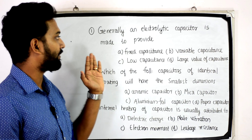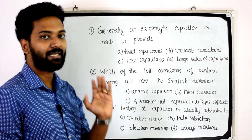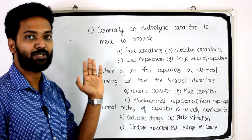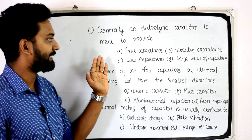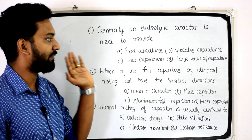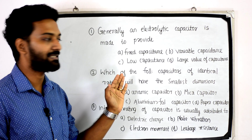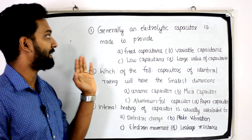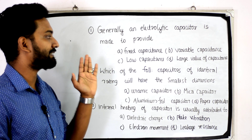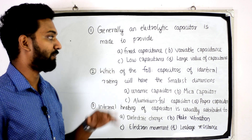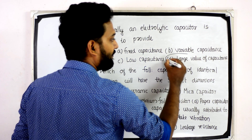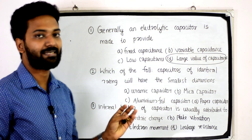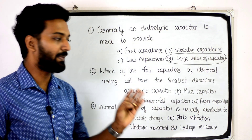First question: Generally, an electrolytic capacitor is made to provide — option: fixed capacitance, variable capacitance, low capacitance, or a large value of capacitance. Generally, an electrolytic capacitor is made to provide a large value of capacitance. The answer is option D, that is large value of capacitance.